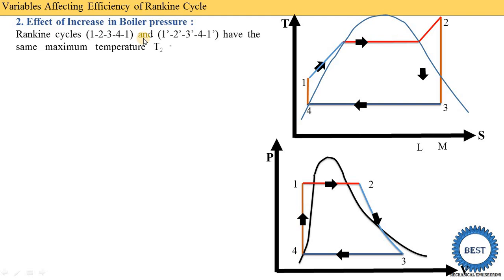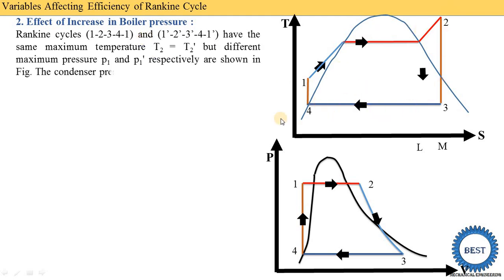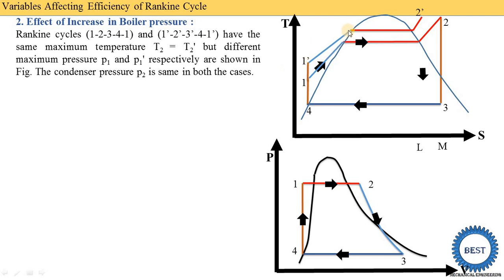Rankine cycle one, two, three, four, one is the simple process. Cycle one-dash, two-dash, three-dash, four, one-dash has the same maximum temperature T2 equals T2-dash, but different maximum pressures P1 and P1-dash respectively. The condenser pressure P2 is the same in both cases — we are not changing the condenser pressure, so the three-to-four condenser pressure line remains. Here P1 is lower than P1-dash, meaning we are increasing the boiler pressure. On the PV diagram, one-dash point is above the one point, then at constant pressure, heat addition gives two-dash, and turbine expansion gives the two-dash to three-dash process.